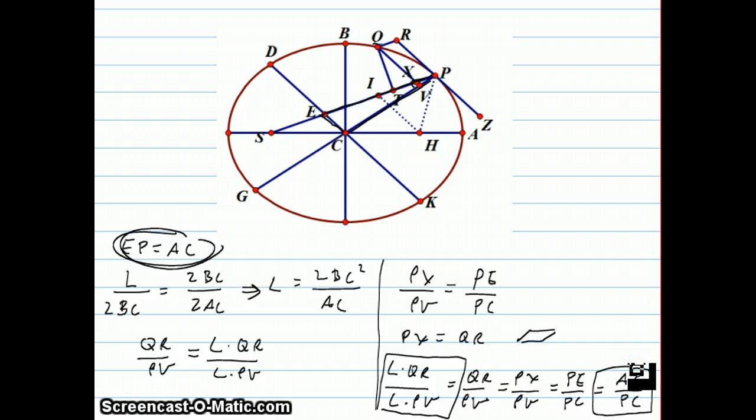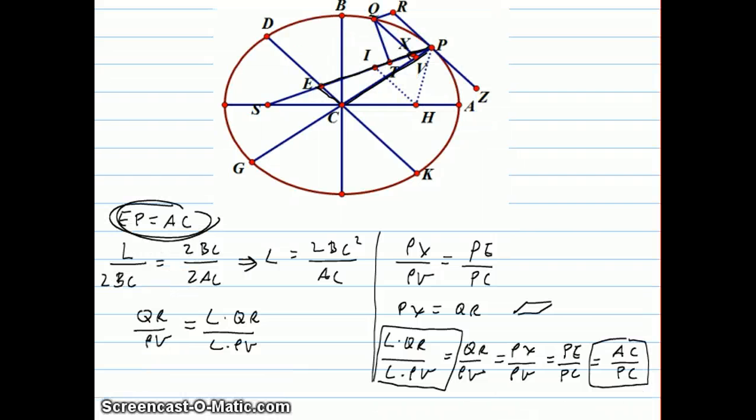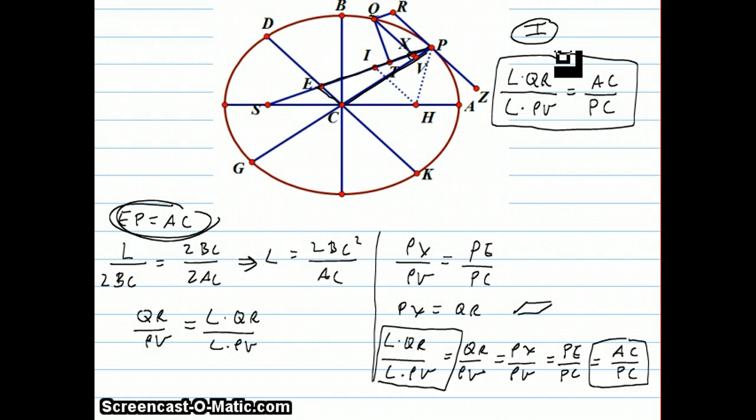This here, that L times QR over L times PV is equal to AC over PC, is not an obvious fact and not one that seems that important, but that is going to be a major one of his five proportions that he's going to build on. So we have now concluded part one, which is actually the longest of the five parts. He has established this unusual proportion that L times QR over L times PV always equals AC over PC. We'll call that equation one.